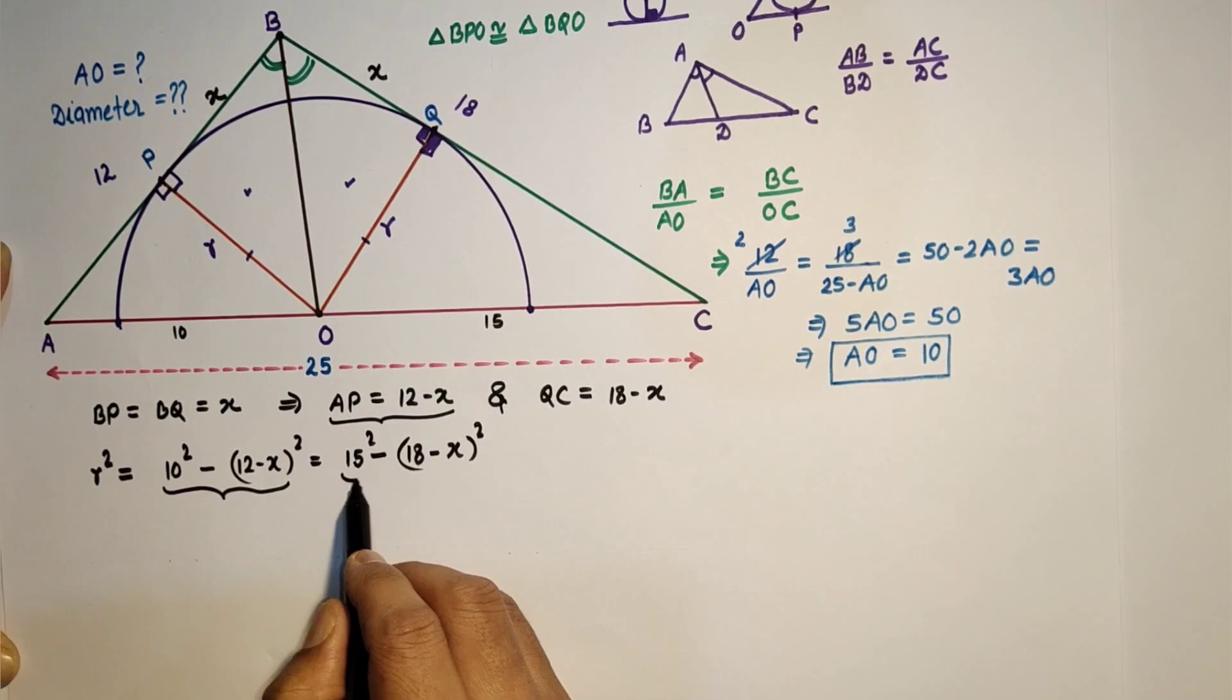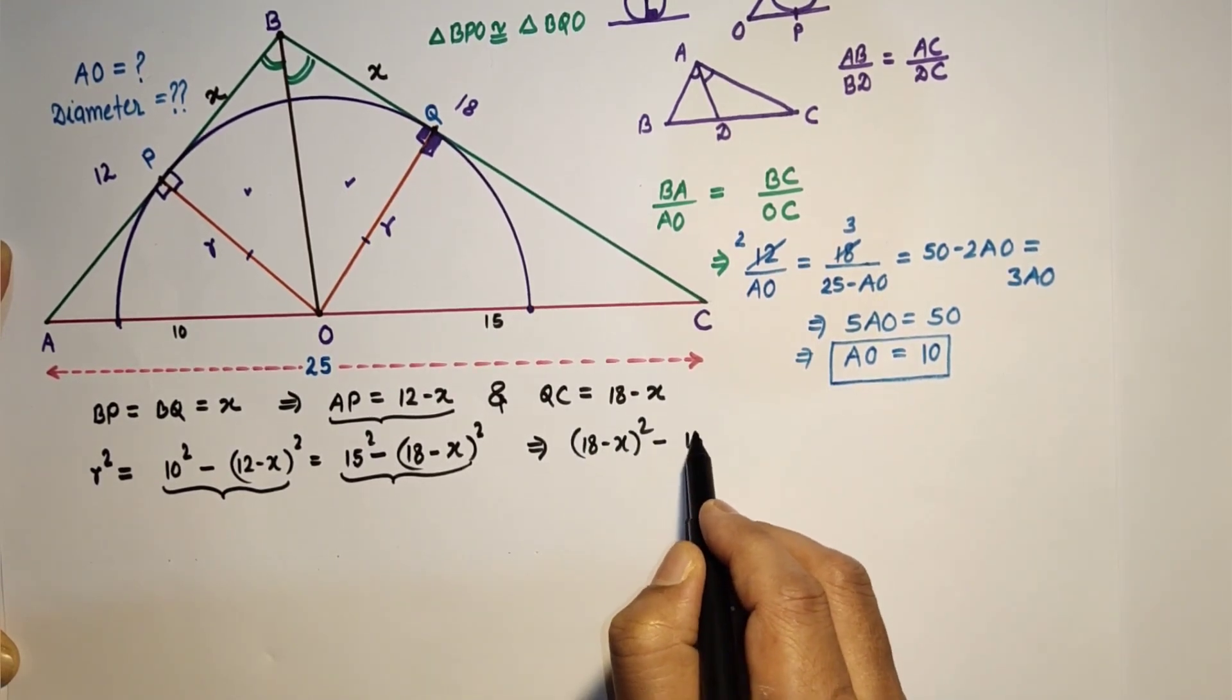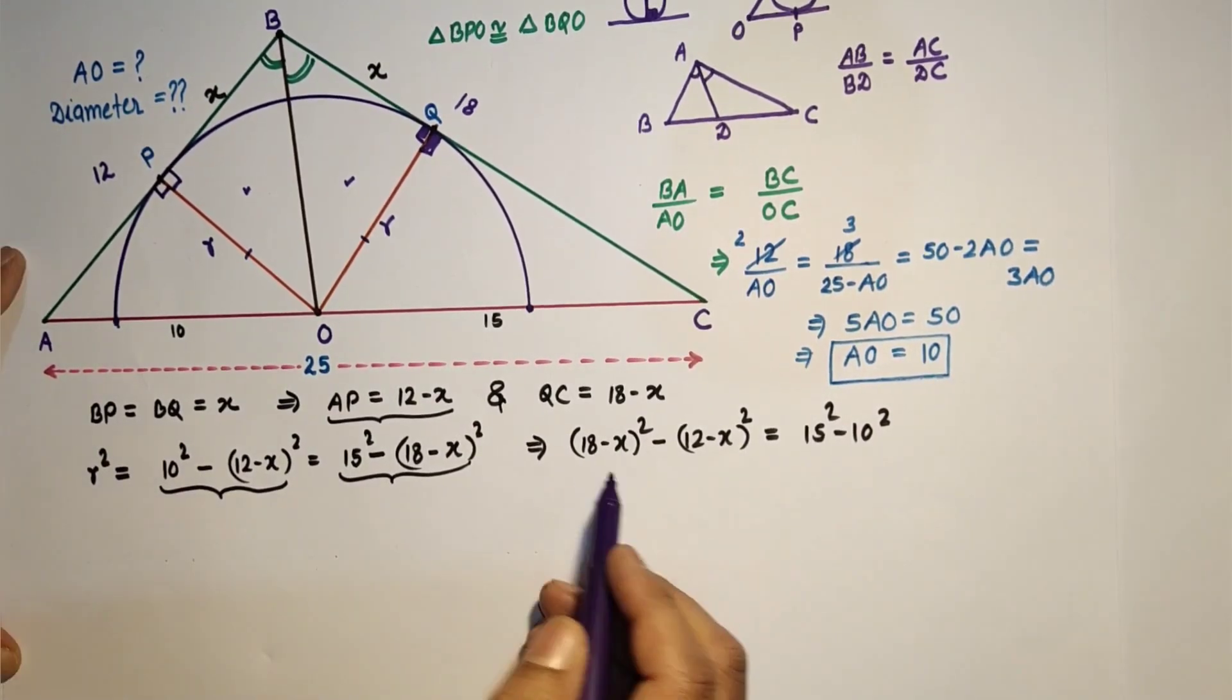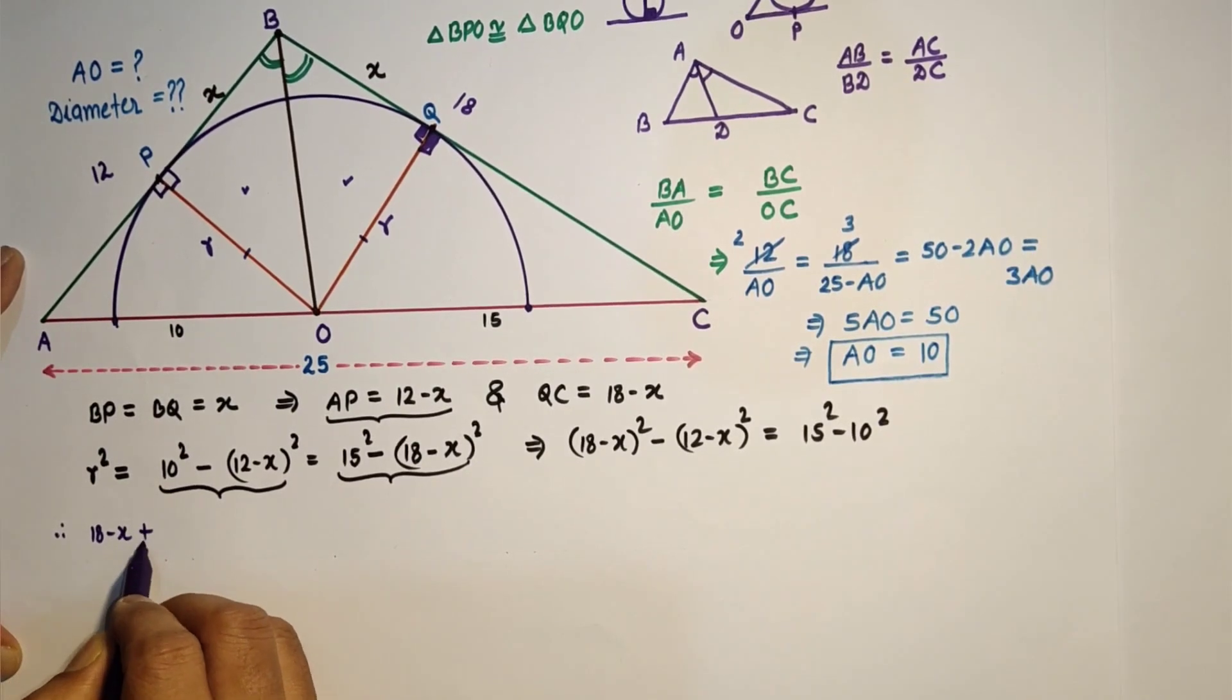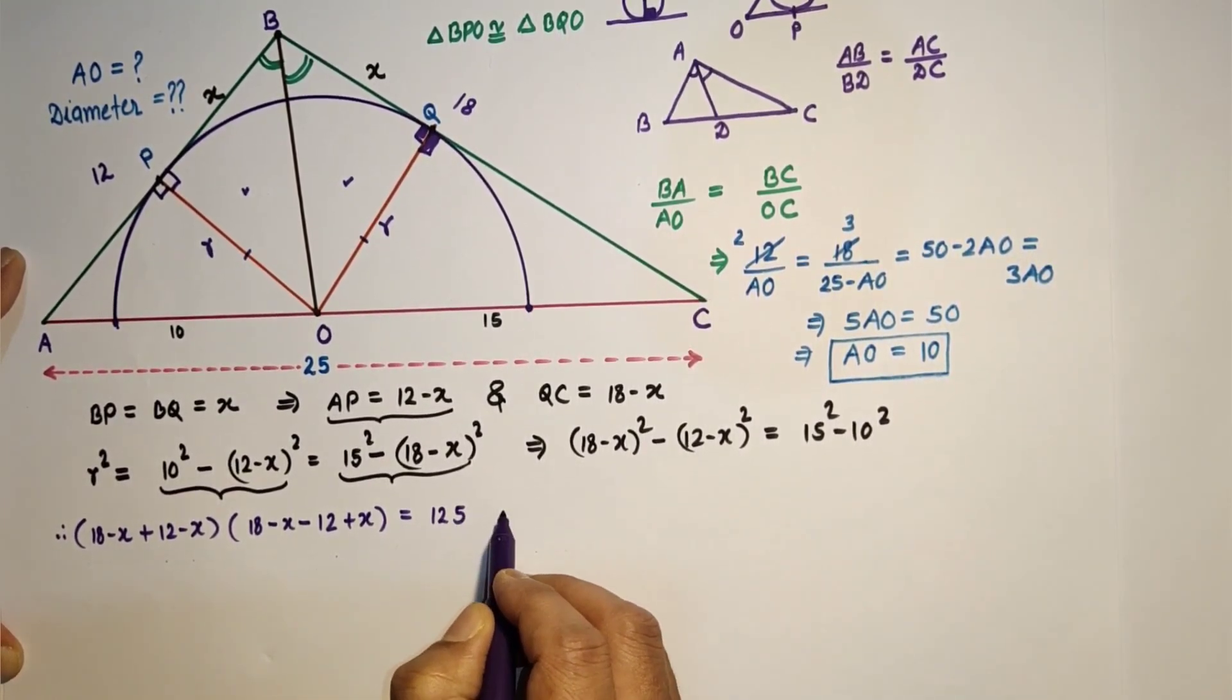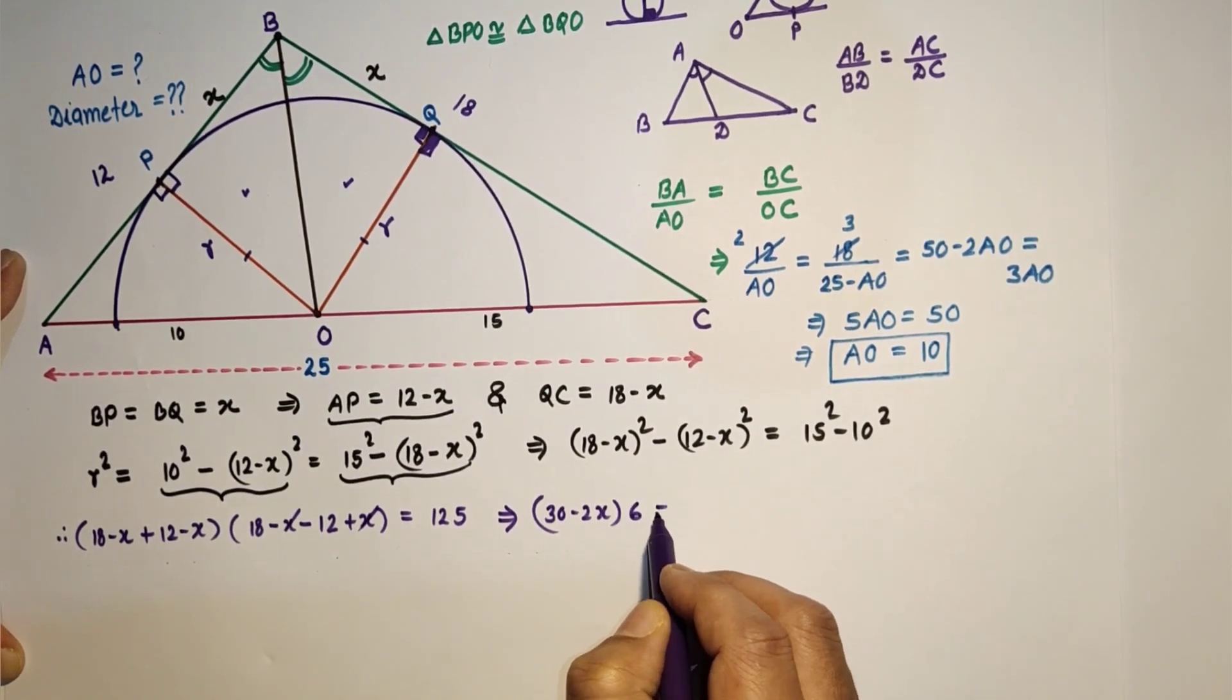So we simplify this. Taking this on the left and taking 10² on the right, so we will get (18 minus X)² minus (12 minus X)² that is equal to 15² minus 10². If we use A² minus B² as (A plus B) into (A minus B), we will get in one bracket sum of these two, in second bracket difference of these two. So we are getting (18 minus X plus 12 minus X) into (18 minus X minus 12 plus X) which is equal to 225 minus 100, so 125. And that is finally (30 minus 2X) into (minus X plus X will get canceled, 18 minus 12 is 6) is equal to 125.